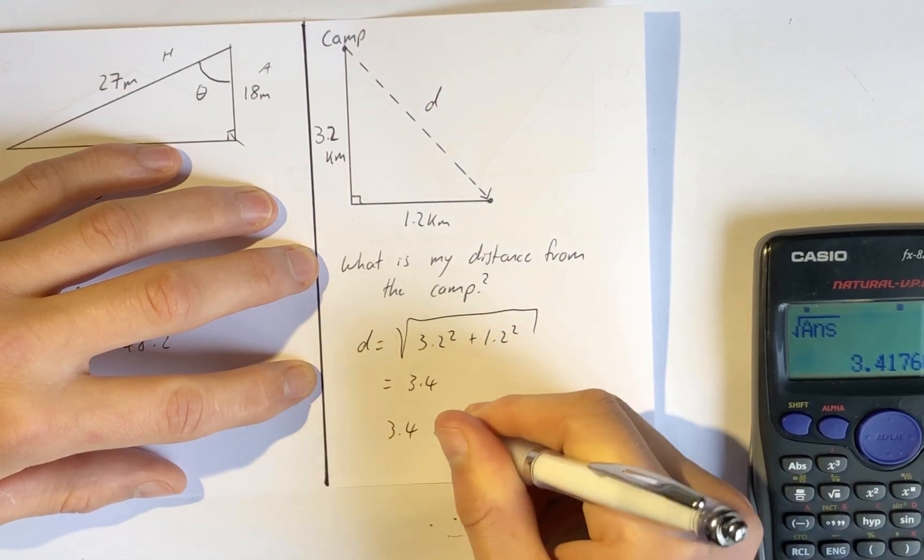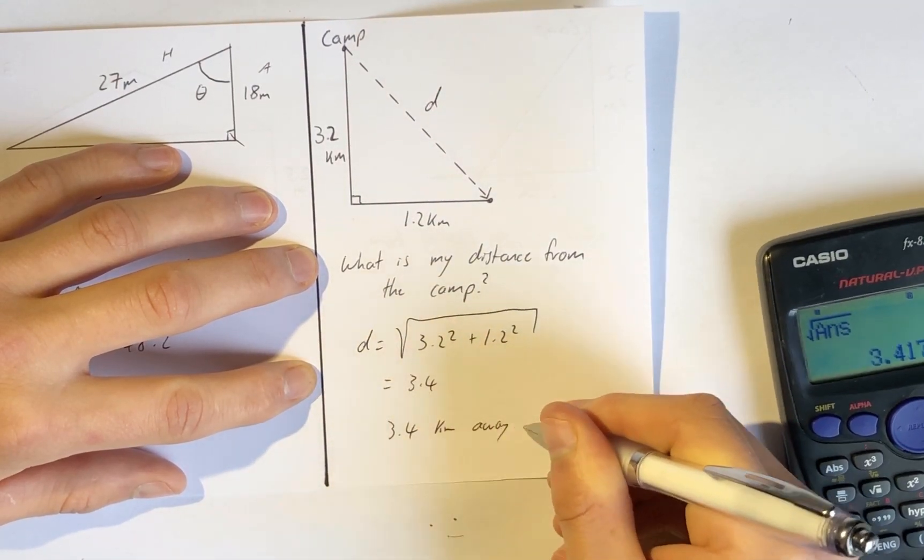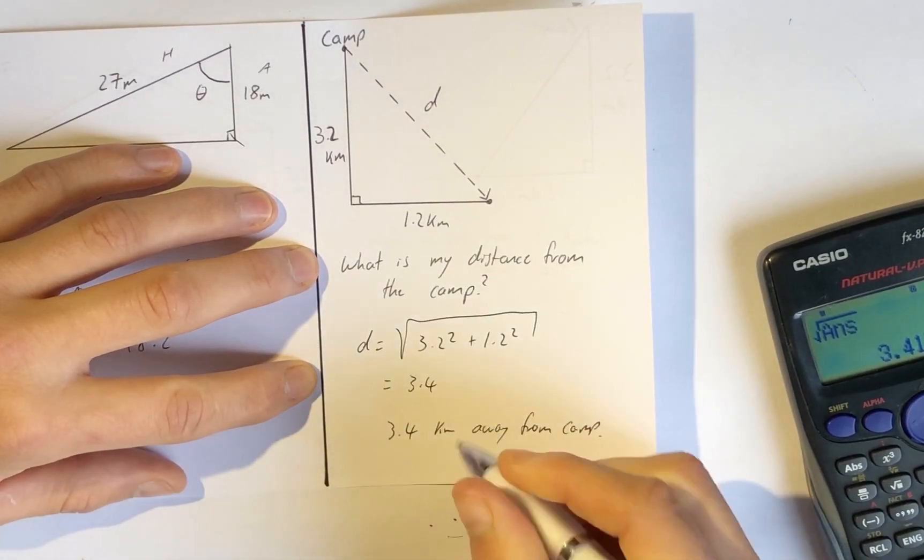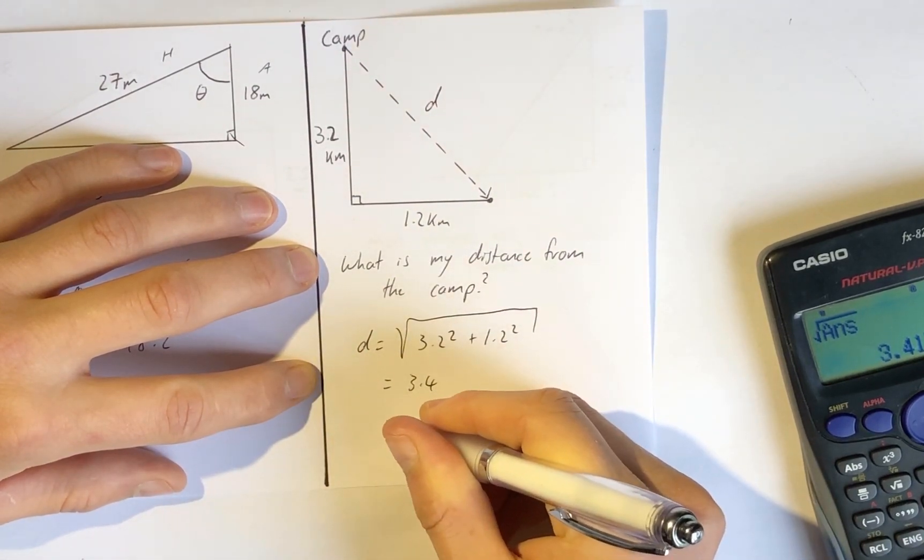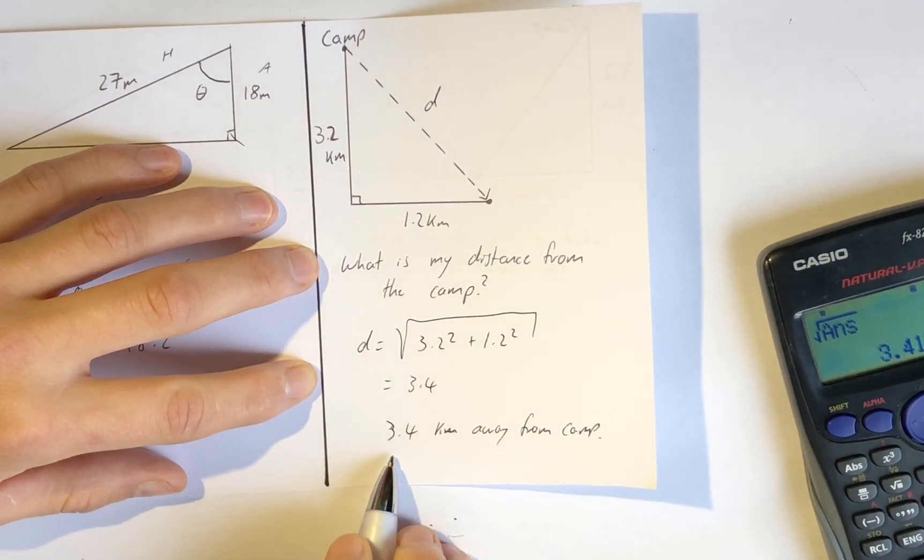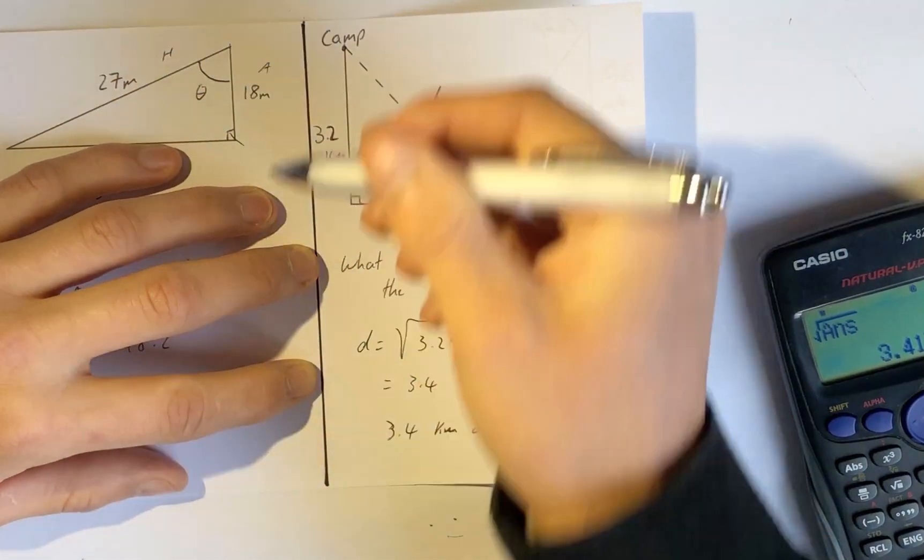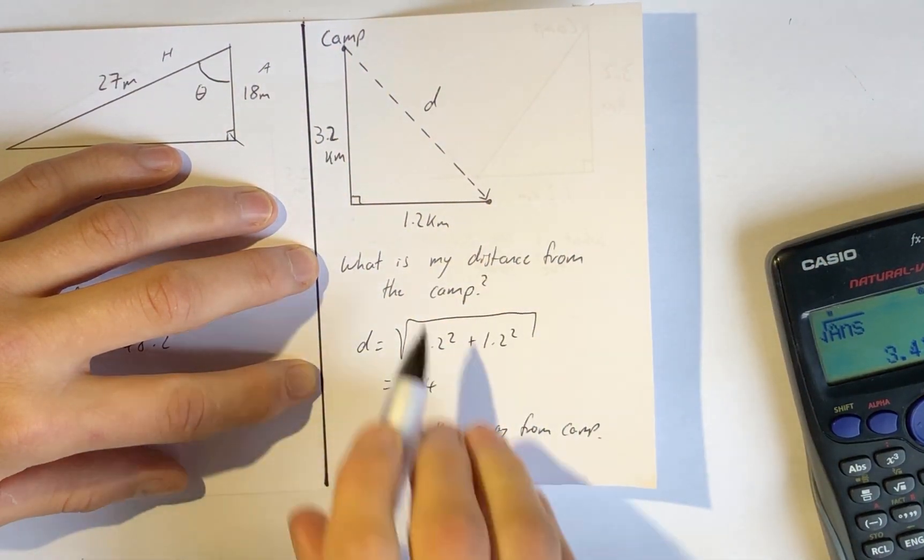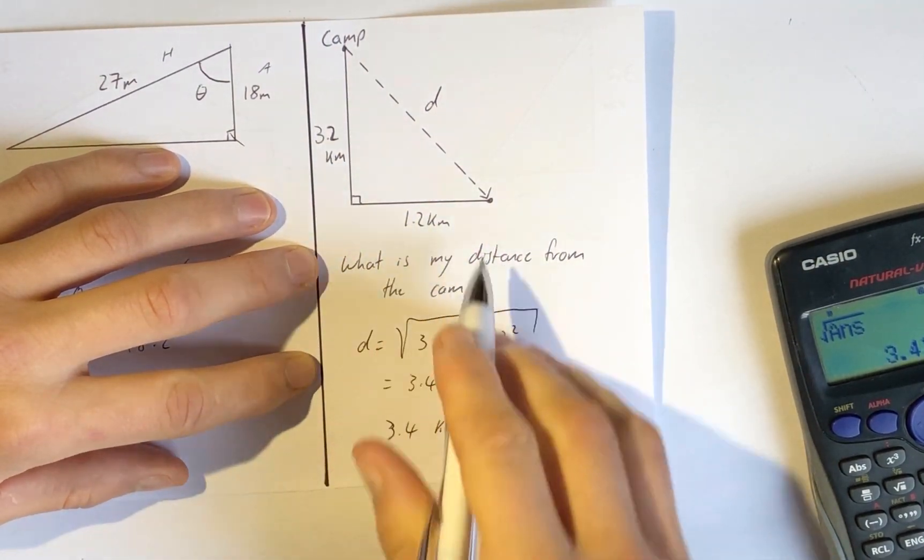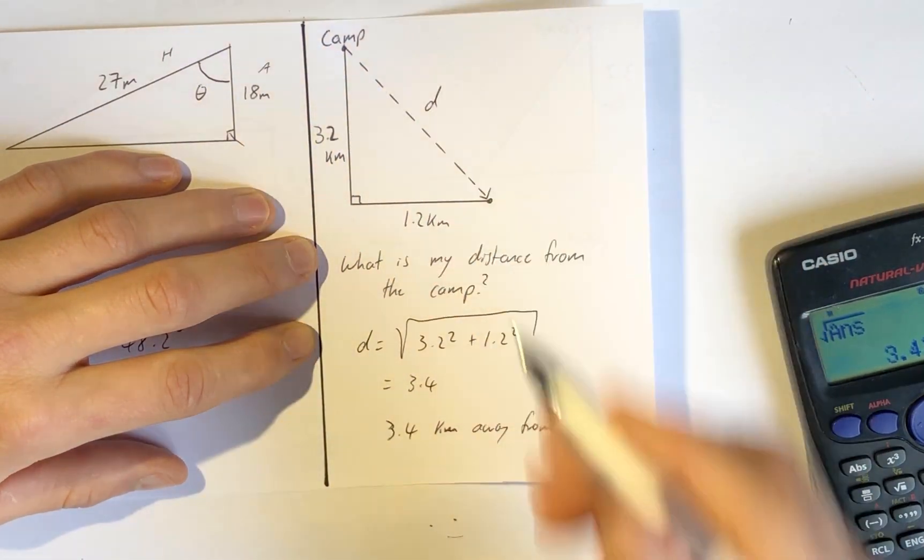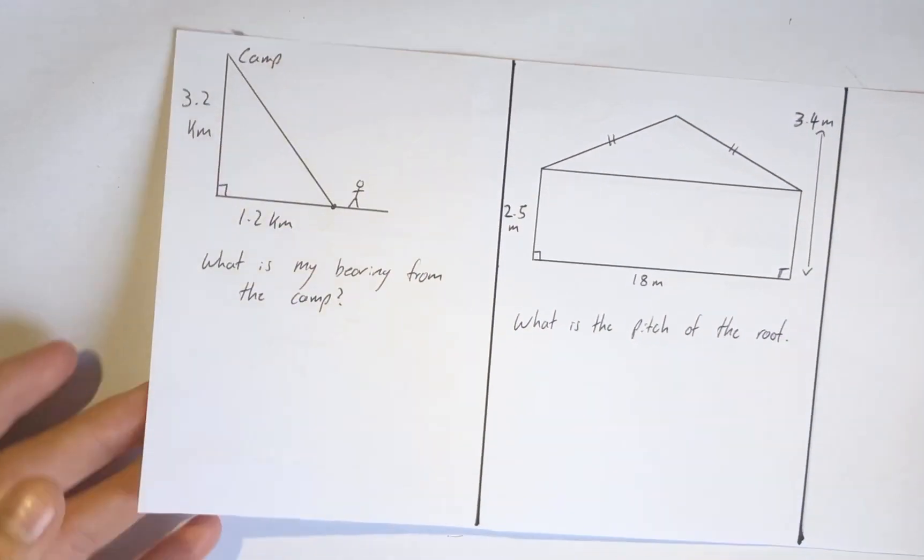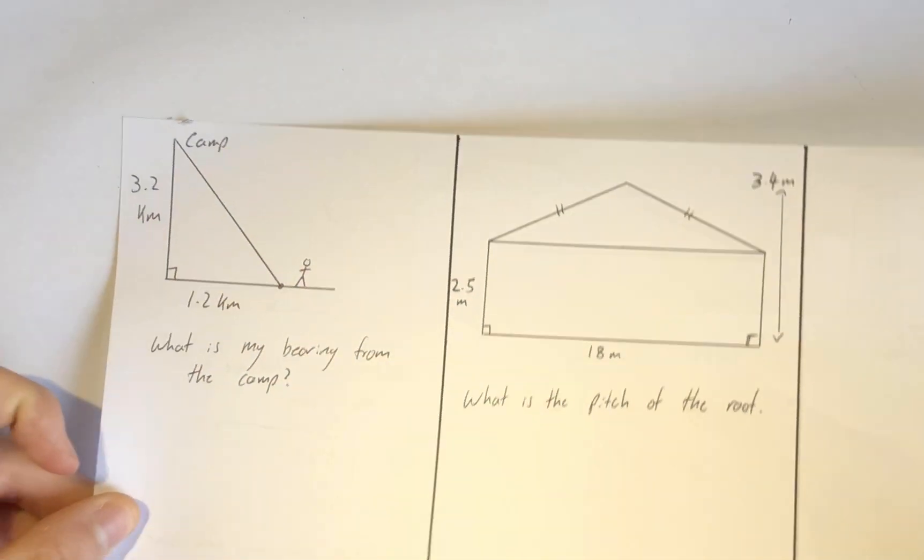So 3.4 kilometers away from camp. I'm answering in context here. I'm also going to check if that makes sense. Does that number make sense? If I've gone 3.2 this way and 1.2 this way, it should make sense that I am a bit more than this side. I should be longer than 3.2 and I am by 200 meters.